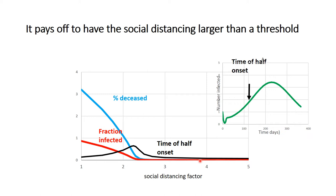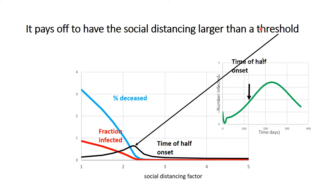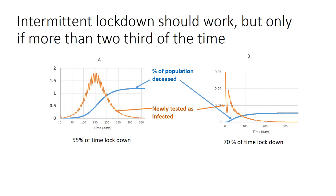There is a paradoxical effect: you should not end up at a soft social distancing factor of about 2.2 or two and a half, because then the epidemic would take a long time. You may not want a complete lockdown factor of 10, but it should be a hard lockdown — approximately factor three or four — so that the epidemic dies down soon and you still have the benefit of a low percentage of deaths. It pays off to have social distancing larger than the threshold of 2.2.